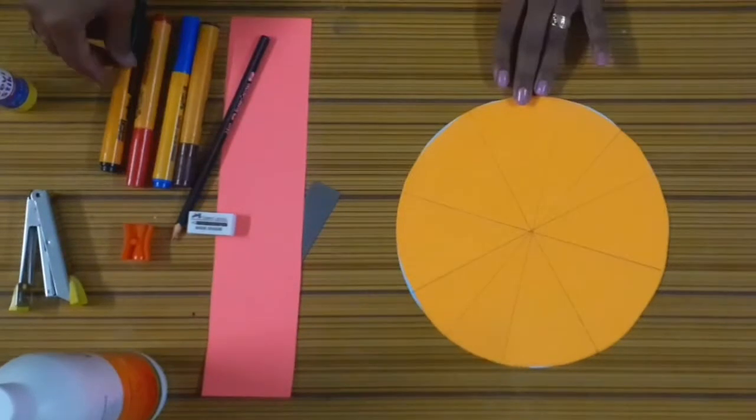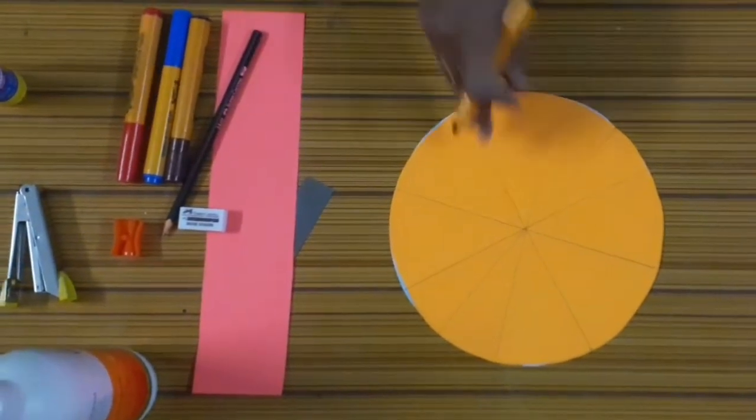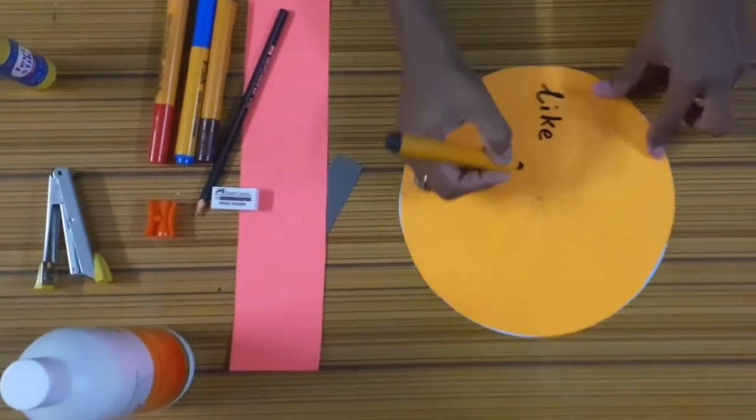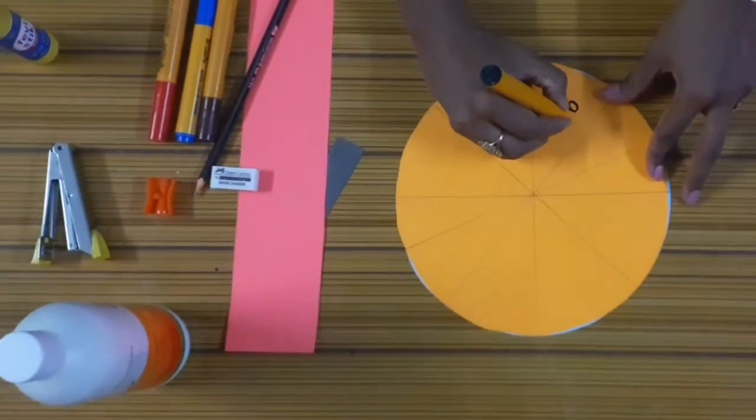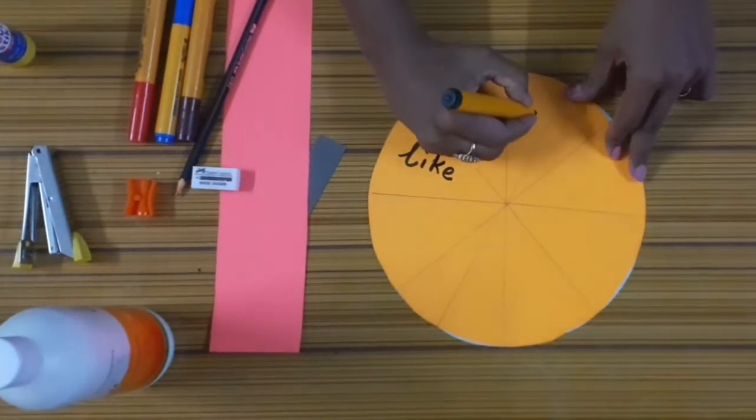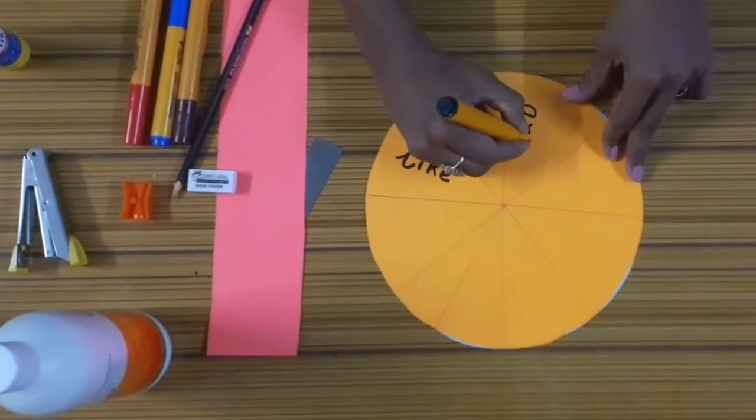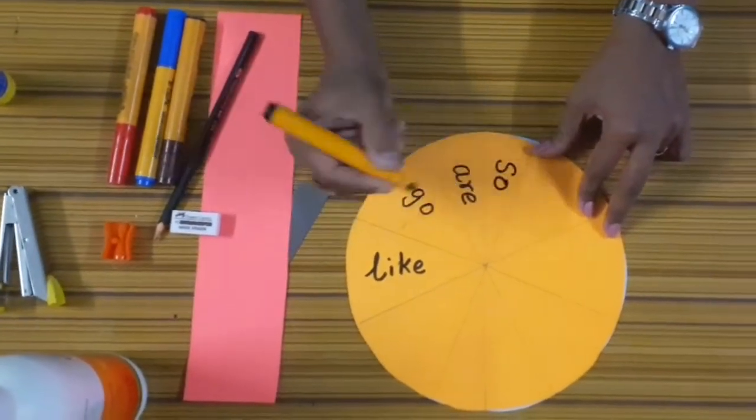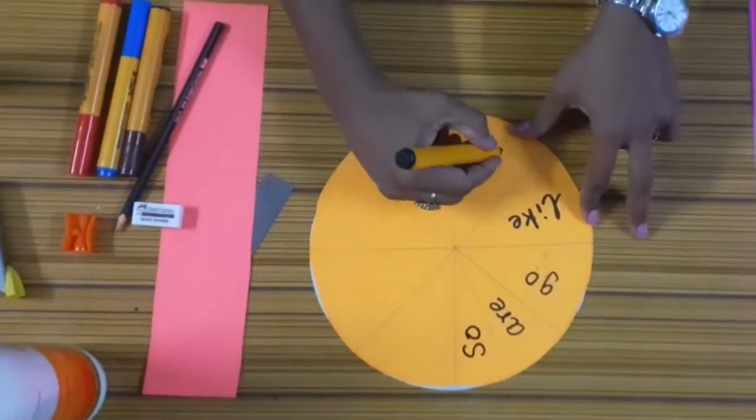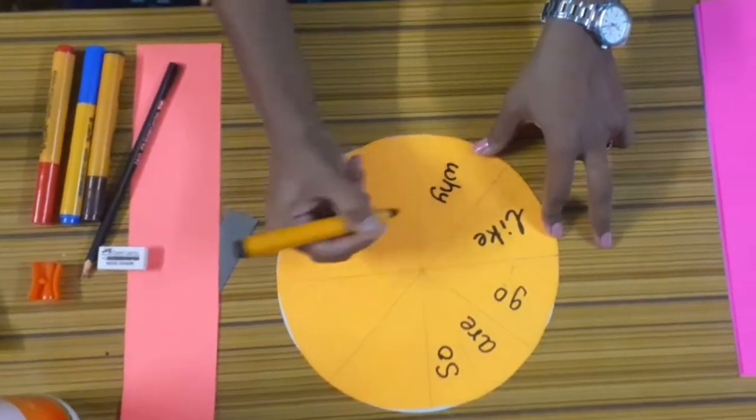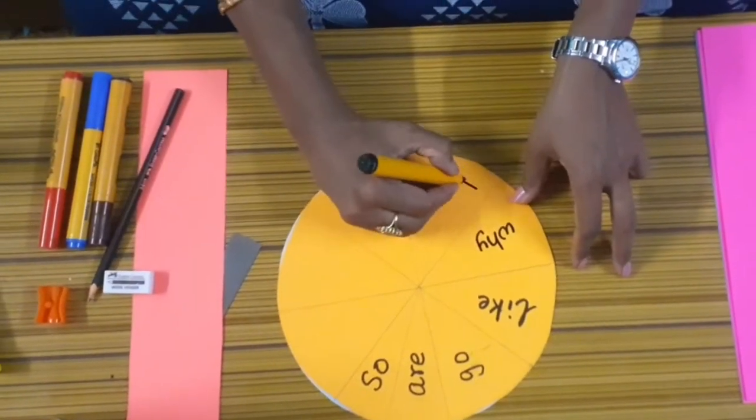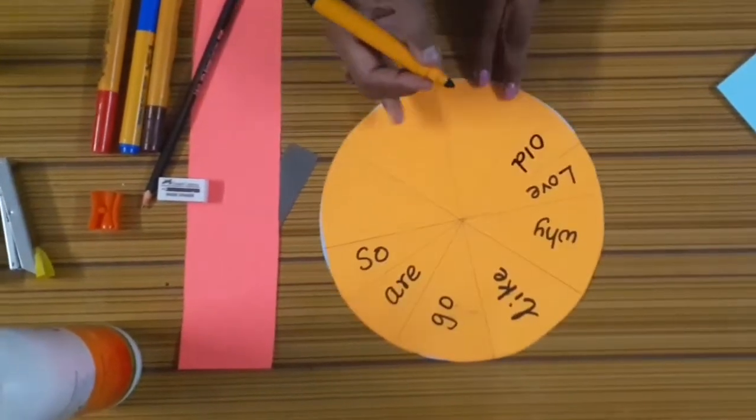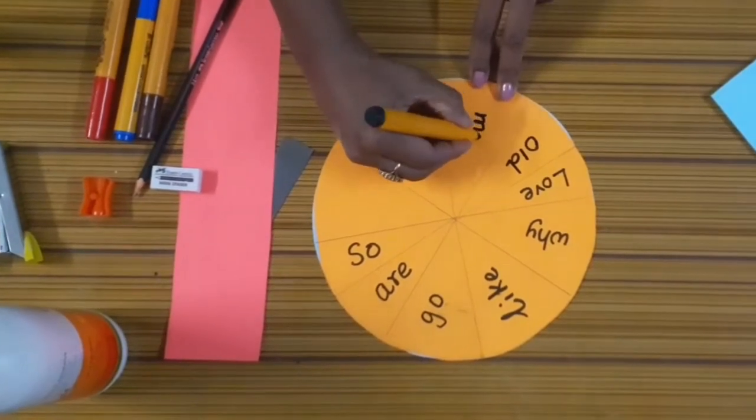Now let's write the sight words: like, go, are, so, why, love, old, and mind. Now we have written 10 sight words in this circle.